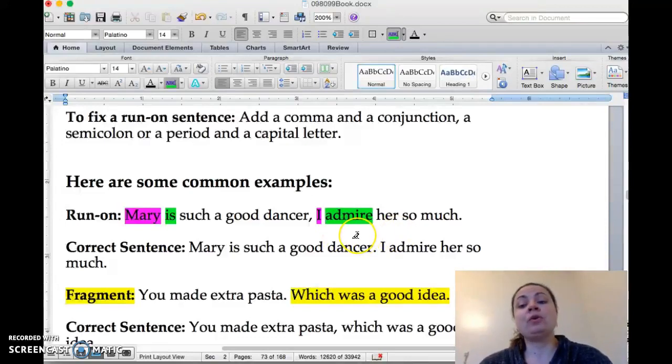Now you're in trouble because you've got two complete thought verbs and subjects that are smushed together without the right punctuation. See here, this is not a semicolon. It's not a comma and a conjunction, and it's not a period and a capital. So this is a run-on sentence because of that. A way to fix it is to put a period between dancer and I. Mary is such a good dancer. That's one CVS, one complete thought verb subject, or one sentence. And then you have another one: I admire her so much.